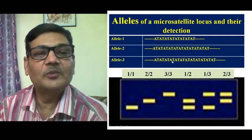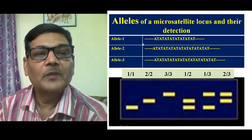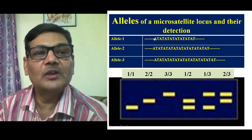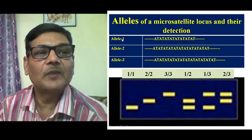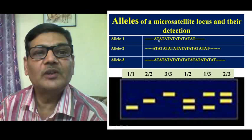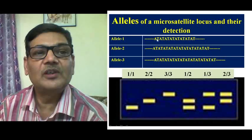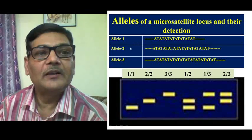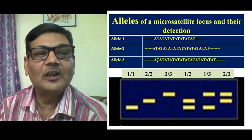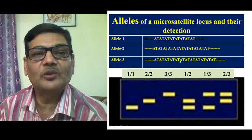Here in this figure, suppose there is a specific microsatellite locus being represented by three alleles: allele 1, allele 2, and allele 3. These are three different forms of the same microsatellite locus. You can see the bases which are repeated several times — like AT, AT, AT — these two bases are tandemly repeated. In allele 2 the number of repeats is more, and in allele 3 the number of repeats is still more, so allele 3 is the longest one.